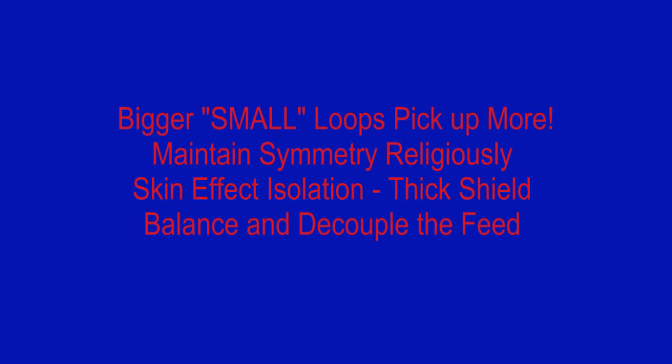So, in summary, bigger small untuned loops are more efficient at any given frequency. Keep the loop small if you want excellent null performance. We're talking between 40 and 60 dB if you do it right, and a clean pattern all around. Maintain perfect symmetry mechanically and electrical all around the loop. If it looks non-symmetrical, even on the schematic, it's impossible for it to be perfectly balanced at all frequencies. Utilize size, thick conductors, balance, and shielding to reduce the antenna effect.